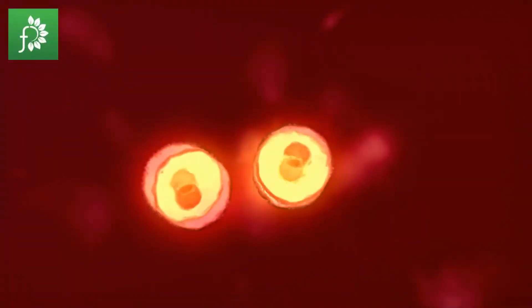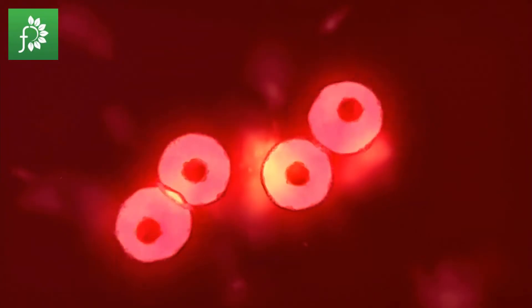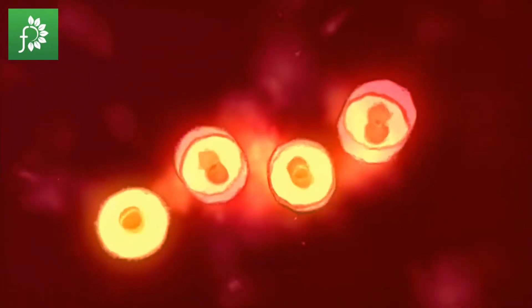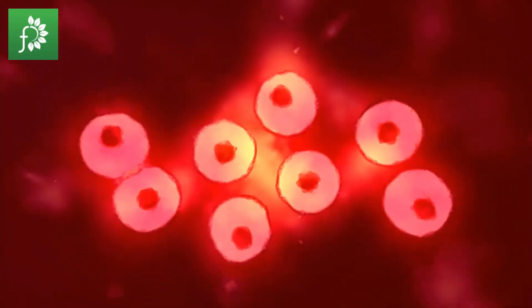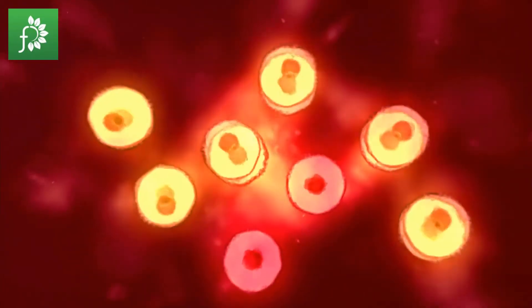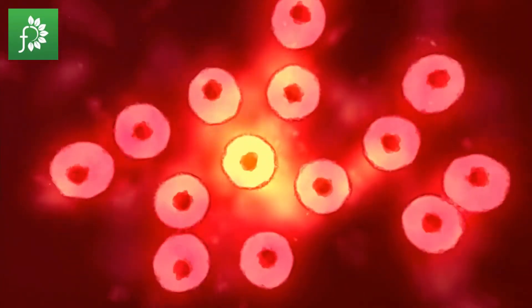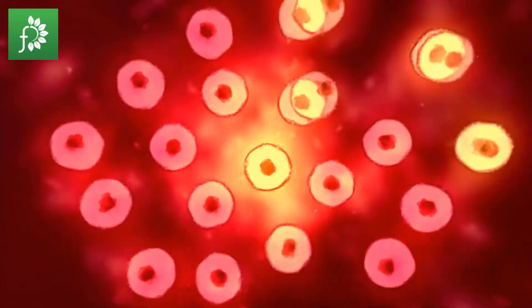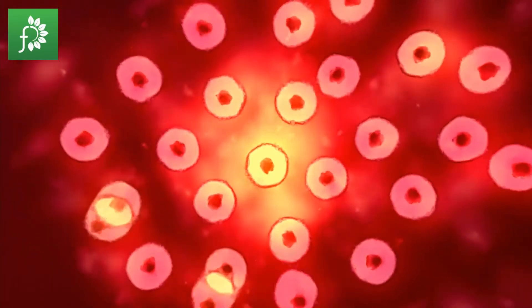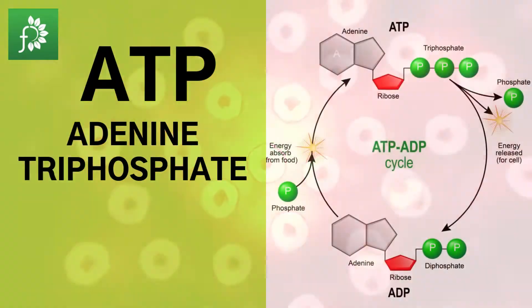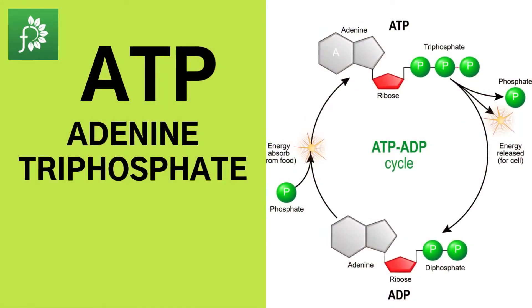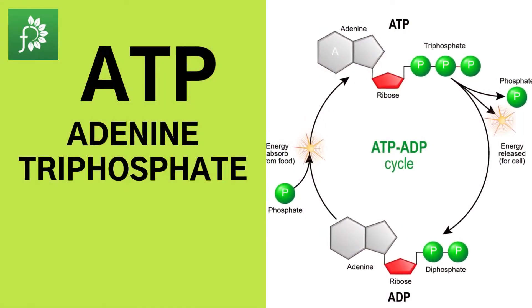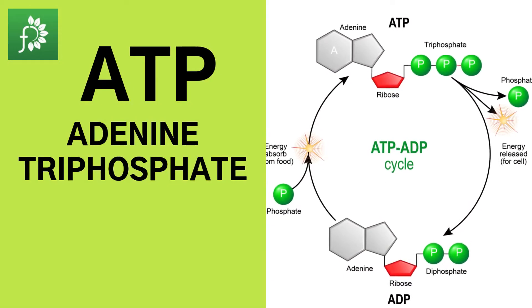Our body is made up of trillions of cells. They all require energy to function. This energy is created within our cells, in the mitochondria. Here, food is converted into chemical energy called ATP.